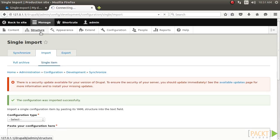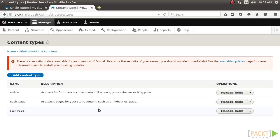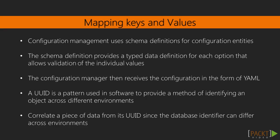Visit the Structure page and then the Content Types page to verify that your content type has been imported. At the most basic level, configurations are just a mapping of keys and values which can be represented as a PHP array and translated into YAML format. Configuration Management uses schema definitions for configuration entities. The schema definition provides a configuration namespace, the available keys and data types, and a typed data definition for each option that allows validation of individual values and the configuration as a whole. The export process reads the configuration data and translates it into YAML format. The configuration manager then receives the configuration as YAML and converts it back to a PHP array. Data is then updated in the database.